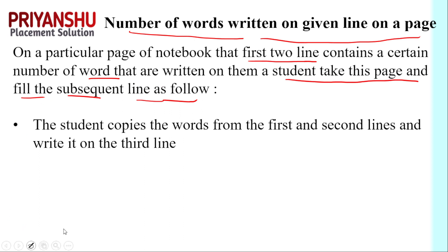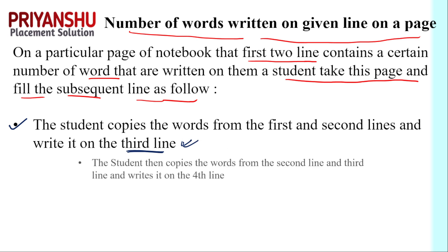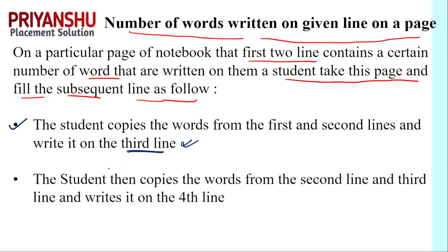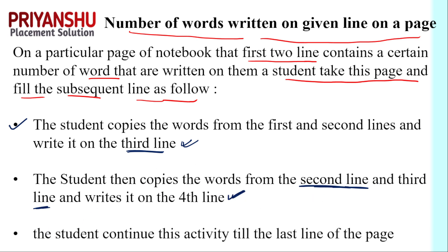The student copies the words from the first line and second line and writes them on the third line — make sure and don't forget this. The next line: the student then copies the words from the second line and third line and writes on the fourth line. The student continues this activity till the last line of the page.